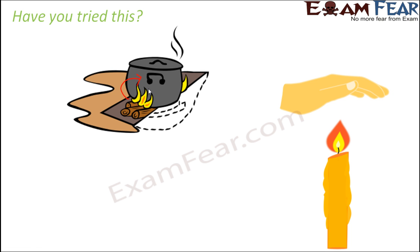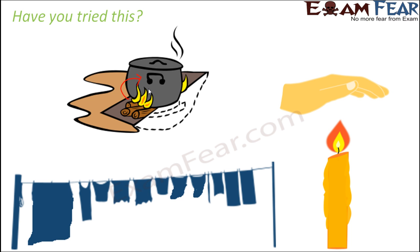If you have a candle which is lit and you place your hand over it at some distance, you feel warm — because heat is getting transferred from the candle to your hand. Similarly, when you wash clothes and keep them in the sun, the sun gives a lot of heat, the temperature increases, heat is transferred from the sun to the clothes, and over time the clothes get dried up.